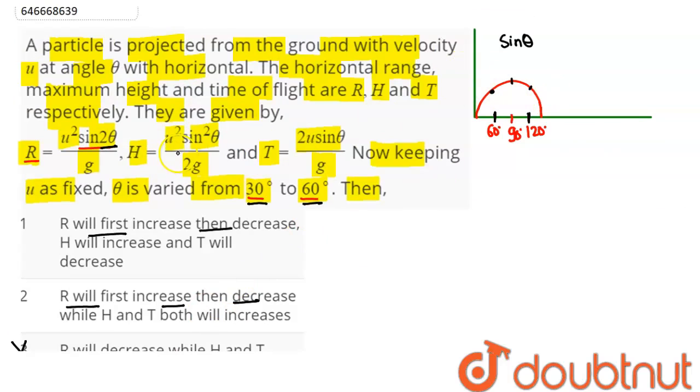Now coming to H, here it is u² sin²θ. As theta varies from 30 degrees to 60 degrees, this angle is 30 degrees. So moving from 30 to 60 degrees, we can see value of sinθ increases, which means sin²θ value will also increase. Hence H will keep on increasing. So H will increase, here it says H increases. So both options are correct.